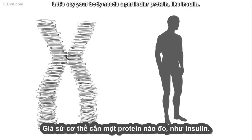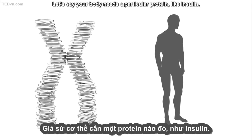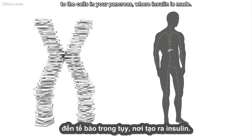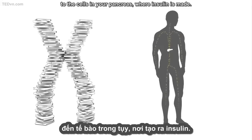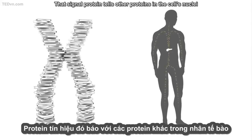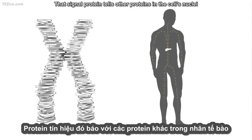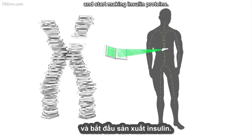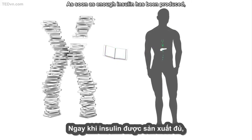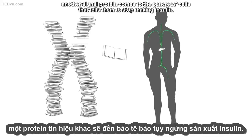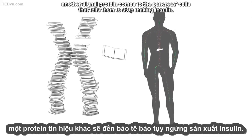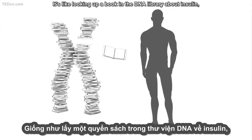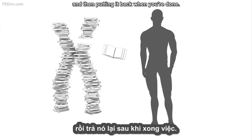Let's say your body needs a particular protein, like insulin. To get it, some of your cells send a protein signal through the bloodstream to the cells in your pancreas, where insulin is made. That signal protein tells other proteins in the cell's nuclei to open up a part of the DNA double helix — the insulin gene — and start making insulin proteins. As soon as enough insulin has been produced, another signal protein comes to the pancreas's cells that tells them to stop making insulin. It's like looking up a book in the DNA library about insulin and then putting it back when you're done.